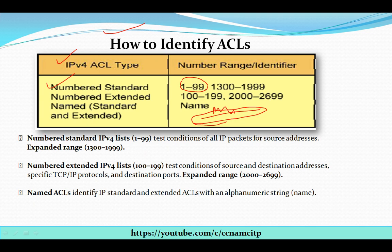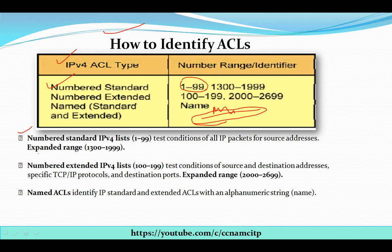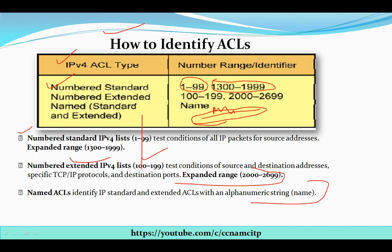In more detail: numbered standard IPv4 ACL uses range 1–299 and tests conditions on all IP packet source addresses. The expanded range goes beyond this. For extended, we use 100–199, with an extended range up to 2000–2699. For named ACLs, they identify IP standard and extended ACLs with an alphanumeric string, which is also known as the name.